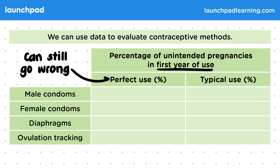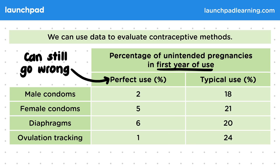No method is 100% effective. The methods of contraception we're going to look at are male condoms, female condoms, diaphragms, and ovulation tracking. Remember that ovulation tracking involves not having intercourse when an egg may be in the oviduct.